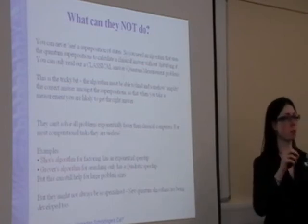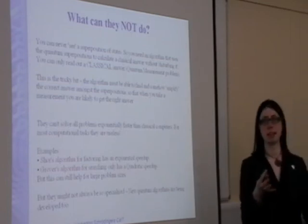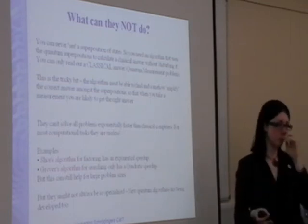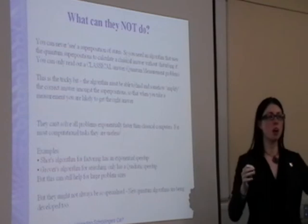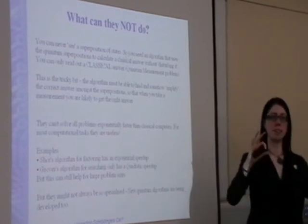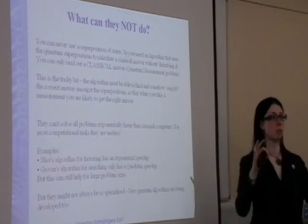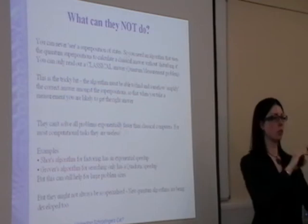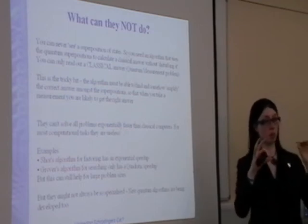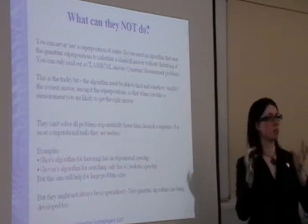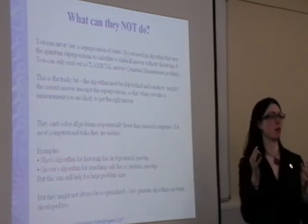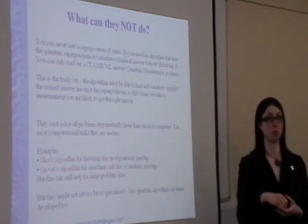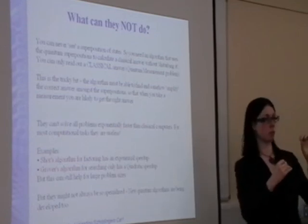If you want to find an object in a database—an entry in an unstructured database—Grover's algorithm takes the database, puts all the entries into a superposition, and then it uses the one you're looking for and entangles that with the database where everything's in a superposition. What you find is that the entry you're looking for can actually be used to reinforce the entry in this superposition of the database items, and therefore you can then extract the address of where that one was.